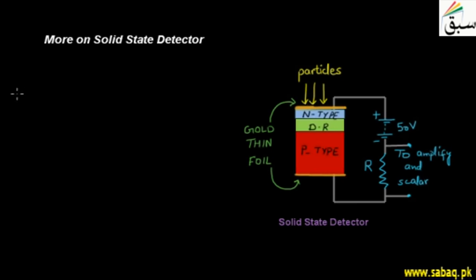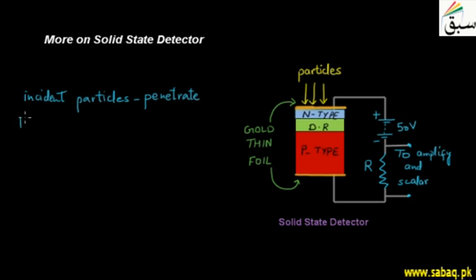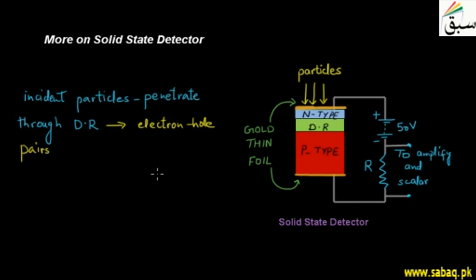When we have incident particles, they strike the front face of the detector and then penetrate through the depletion region. As they penetrate the depletion region, we have electron-hole pairs created. The minimum energy required to create electron-hole pairs in this p-n junction is almost 3 to 4 electron volts.